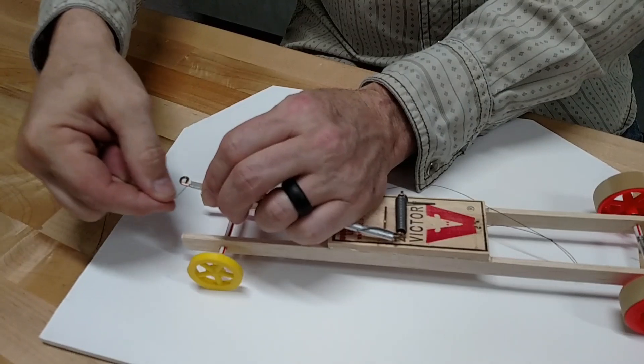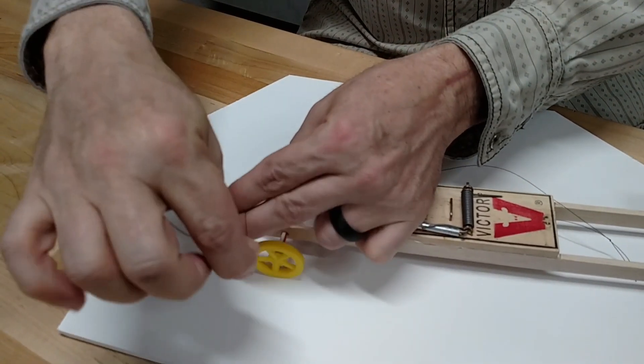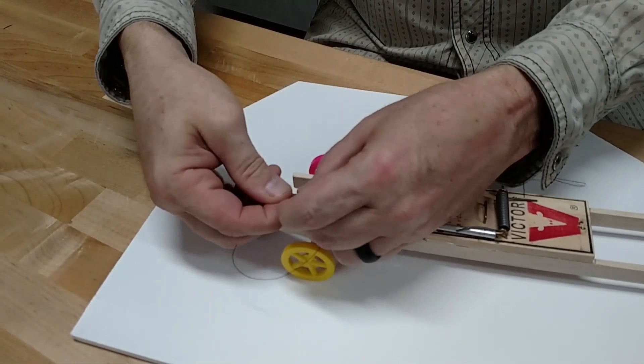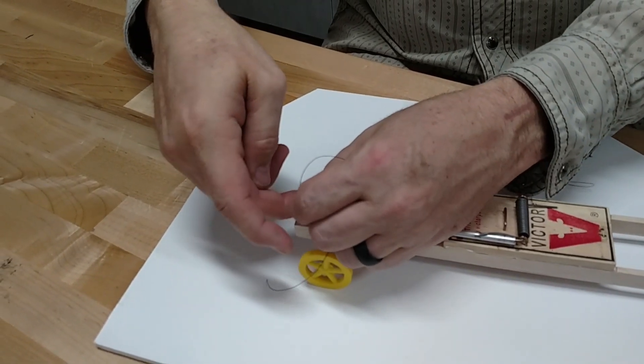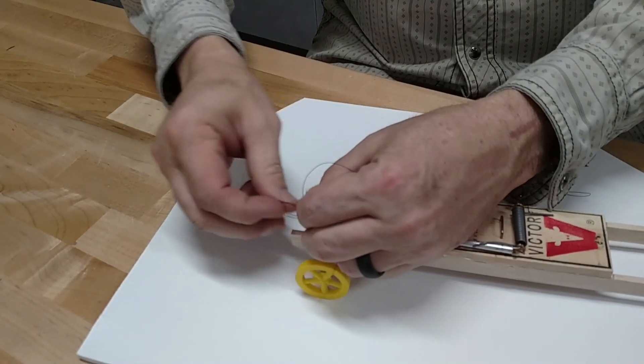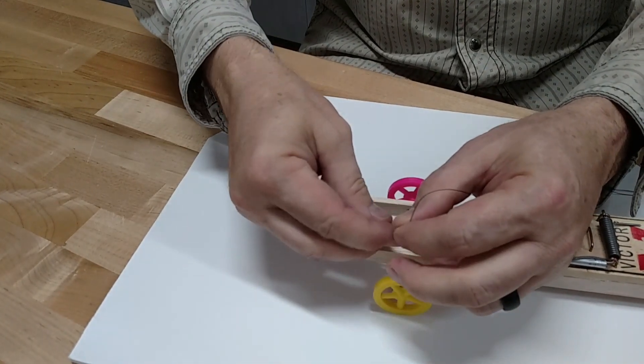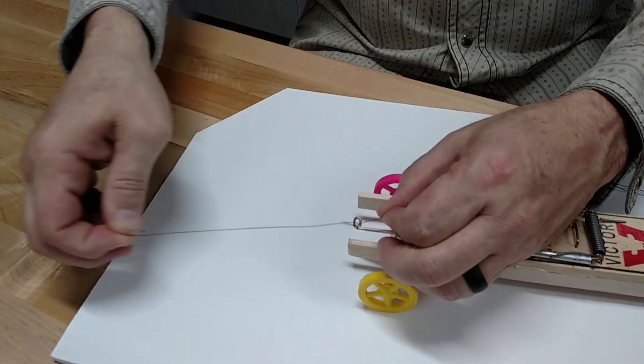What I do is pinch it and wrap it around like this a couple of times. That way the length is locked in. Now all I have to do is tie a couple of knots in it. Tie a knot and tie it again. You can tie a couple of them, no problem.